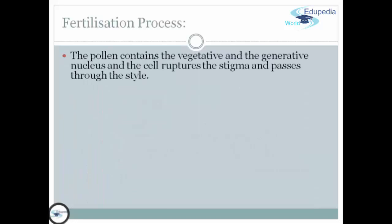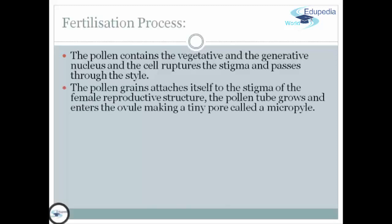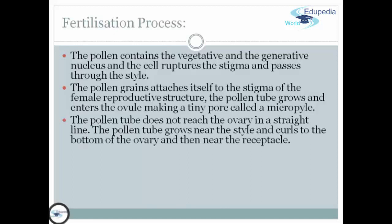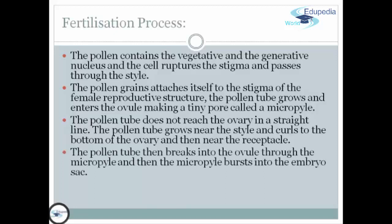The pollen contains the vegetative and generative nucleus. The cell ruptures the stigma and passes through the style. The pollen grain attaches itself to the stigma of the female reproductive structure. The pollen tube grows and enters the ovule through a tiny opening called the micropyle. The pollen tube does not reach the ovary in a straight line; it grows near the style and curls to the bottom of the ovary, then near the receptacle.